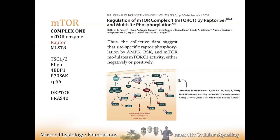A student asks: why does everything seem to be trying to inhibit mTOR? It's a really good question. The answer is that it's super tightly regulated because otherwise you'd anabolize yourself to death. It's a matter of regulating energy expenditure. Think of balancing a checkbook: you have income coming in and expenses going out. Protein synthesis is super expensive — massive ATP consumption — like rent, it's about half the metabolic price tag of a cell.